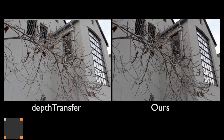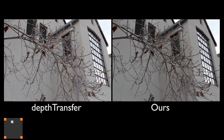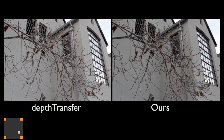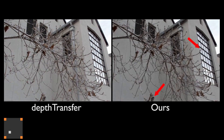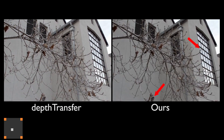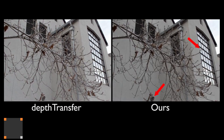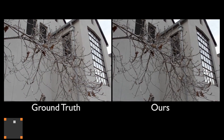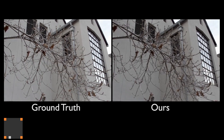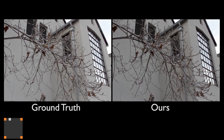Next, we show a challenging scene which contains many thin structures from the tree twigs. Note that our result has artifacts in the challenging regions, but is still very similar to the ground truth in most other regions.